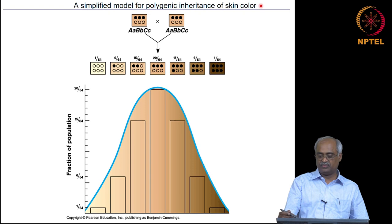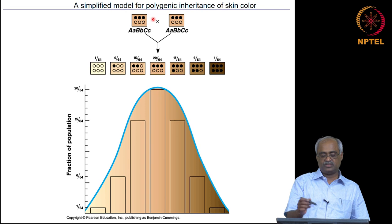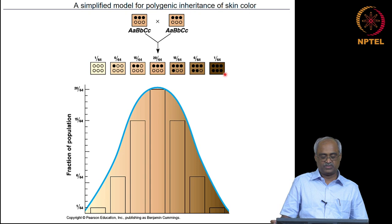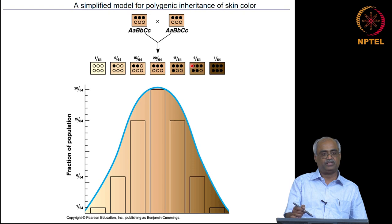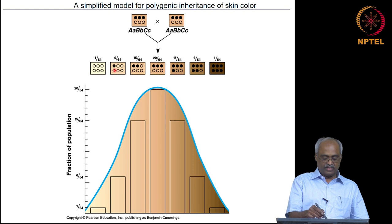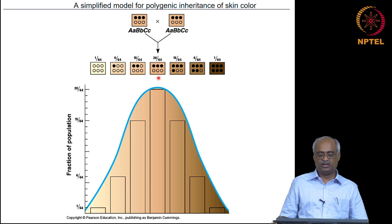Here we are talking about skin color in some organism — the skin color is determined by three different genes. If you have a parent that is totally heterozygous for all the genes and you cross it with another like in selfing, you get many genotype combinations. One-sixty-fourth will be completely recessive, another one-sixty-fourth completely dominant, and in between there are many combinations. The contribution of a given allele in combination with alleles of other genes gives you variations in color.